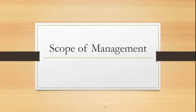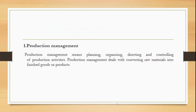The next topic is the scope of management. The first area is production management, which involves converting raw materials into finished goods and products. This includes planning, organizing, directing, and controlling all production management activities.